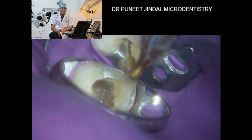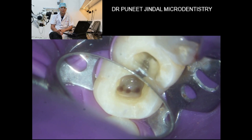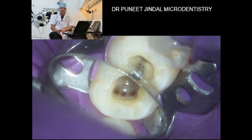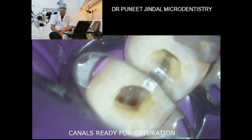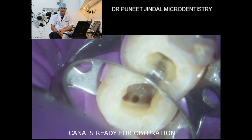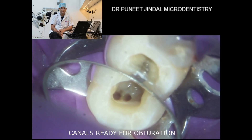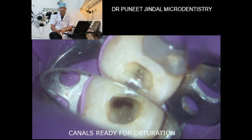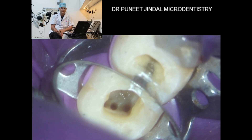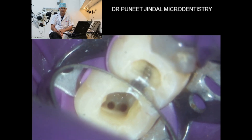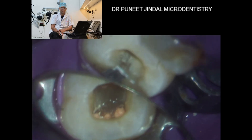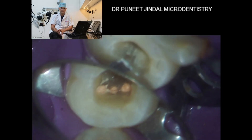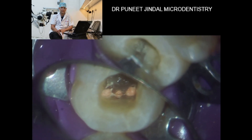You can see the neat and clean chamber — all the canals have been prepared, dried, and are ready for obturation. There are two distal canals and three mesial canals. This is the x-ray of the master cones. This is the picture of the chamber just after obturation, where you can see some excess sealer.